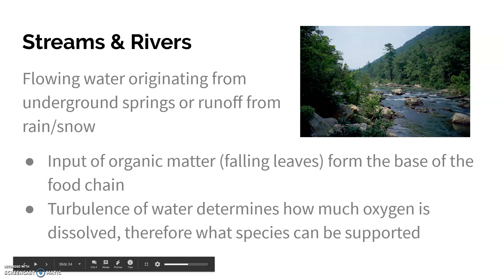Streams and rivers are the flowing water ones. They originate typically from underground springs or runoff from rain or snow. Because they are constantly flowing, it's not great for floating plants, so they depend on the input of organic matter and its decomposition to form the base of the food chain. The turbulence of the water also determines how much oxygen can be dissolved — places with rapids get much more oxygen than slow-moving water — and that determines what kind of species can be supported, because things need oxygen.